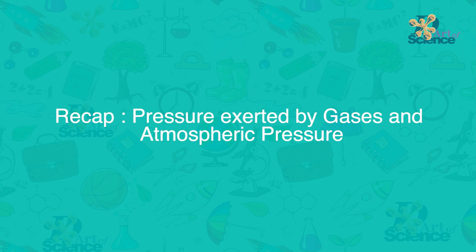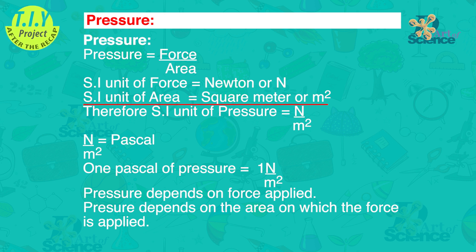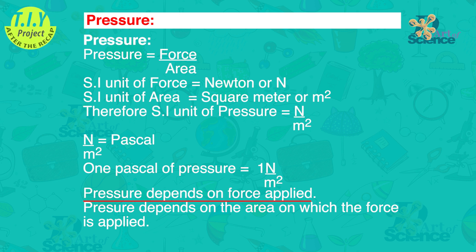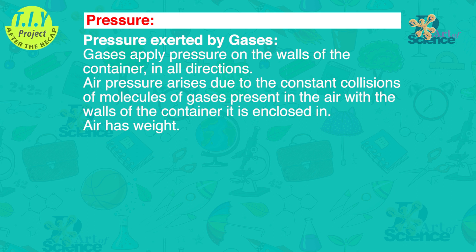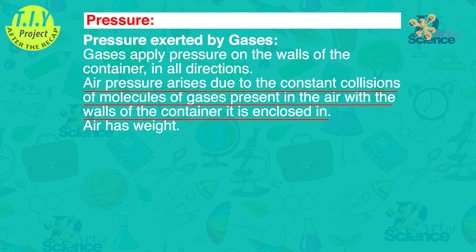Let's do a quick recap. We learnt that pressure is force upon area. The SI unit of force is newton and the SI unit of area is square meter, so the SI unit of pressure is newton per square meter, also called pascal. One pascal of pressure is one newton per square meter. Pressure depends on the force applied and also on the area on which the force is applied. Gases apply pressure on the walls of the container in all directions. Air pressure arises due to the constant collision of molecules of gases with the walls of the container.